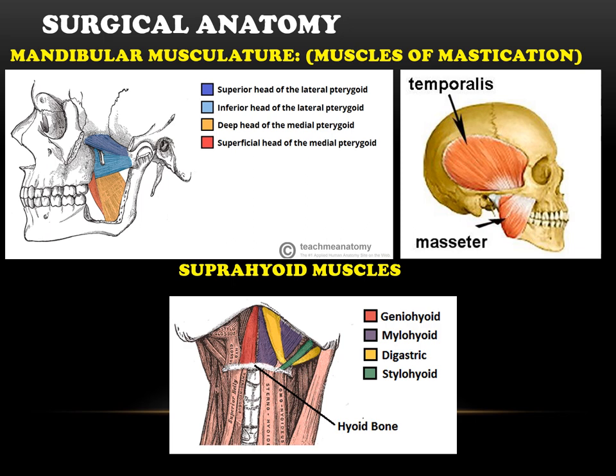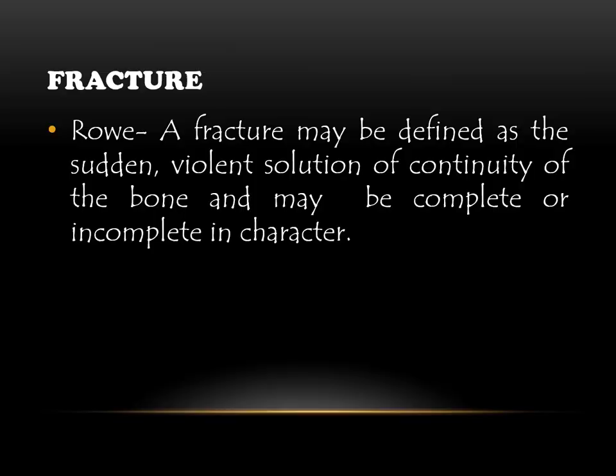There are certain muscles attached to the mandible, mainly the muscles of mastication. We have the lateral and medial pterygoid, temporalis, and the masseter muscle. The masseter attaches to the lateral surface of the ramus. The temporalis inserts onto the coronoid process. The lateral pterygoid attaches to the neck of the condyle and the medial pterygoid attaches to the medial surface of the ramus. The suprahyoid muscles — geniohyoid, mylohyoid, and digastric — also attach to the mandible. The importance of these muscles in fractures is that they exert a muscle pull on the fractured segment, causing displacement of the fracture.